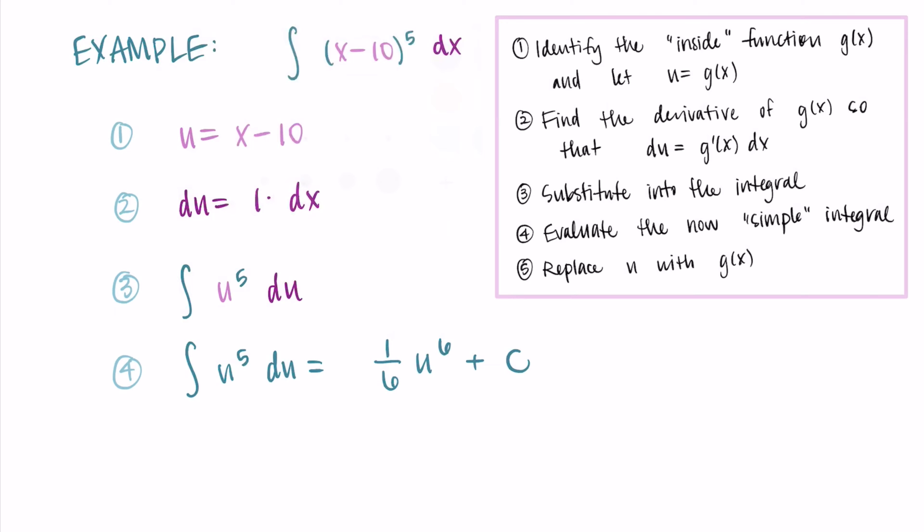So to finally just wrap this problem up, I have to replace it back with the original variable. So u is equal to x-10. So I'm getting (1/6)(x-10)^6 + C as my antiderivative.